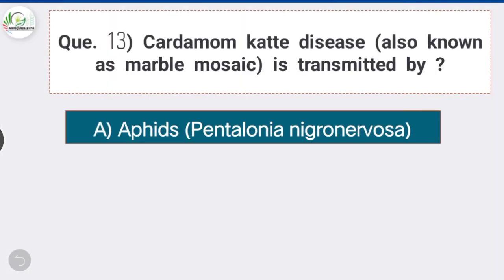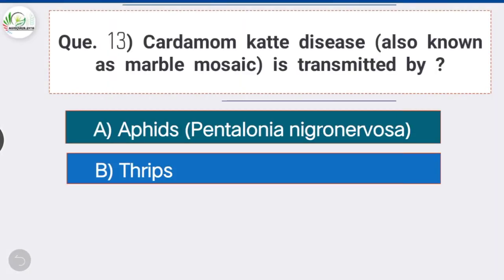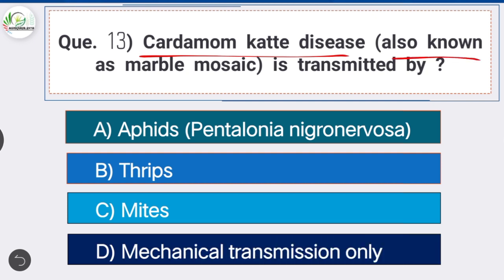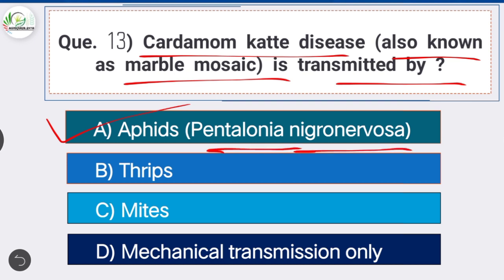Question 13: Cardamom katte disease, also known as marble mosaic, is transmitted by the aphid with the scientific name Pentalonia nigronervosa.